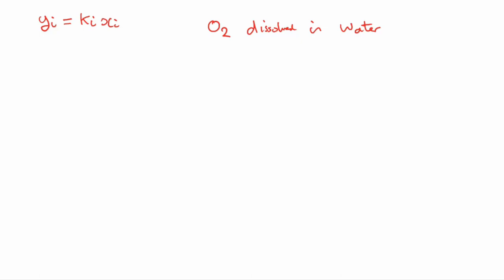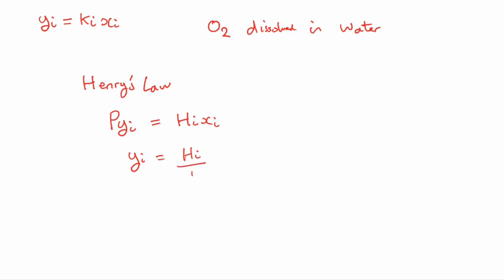In this case, we can represent our K value for the oxygen fraction using Henry's law. Henry's law states that pressure times the fraction in the vapor phase equals Henry's constant times the fraction dissolved in the liquid phase. Rearranging for yi gives us exactly the same form Ki·xi, where in this case Ki is the ratio of Henry's constant to the total pressure of the system.